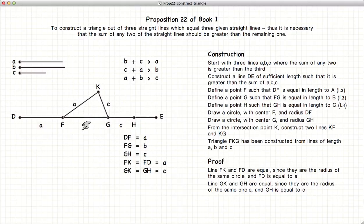So we have length A, B, C. And thus we have constructed our triangle from the three straight lines.